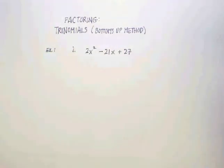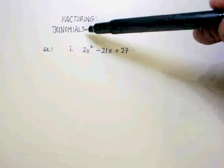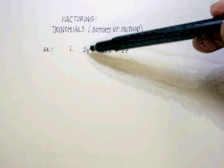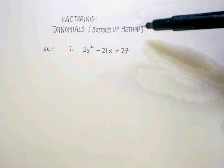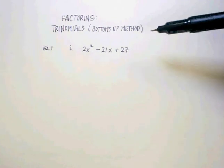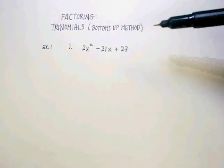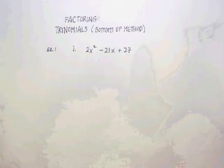In this video, I'm going to show you how to factor a trinomial where the leading coefficient is something other than one. It's a method called the bottoms-up method. I won't get into the mathematics behind it, the reasoning behind it, but I'll just show you what the procedure is because it's actually kind of an easy procedure to do.